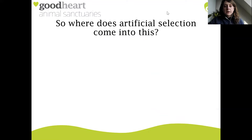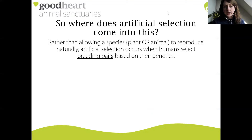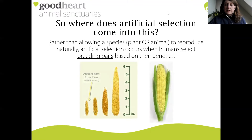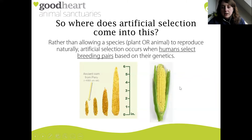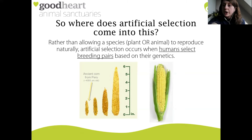So where does artificial selection come into all of this? Rather than allowing a species - plant or animal - to reproduce naturally, artificial selection occurs when humans select the breeding pairs based on their genetics. Here's an example of modern day corn. You're likely familiar with the maize on the right hand side - this is modern corn on the cob, with a very high number of fruits, producing a much higher yield than its ancestral organism.